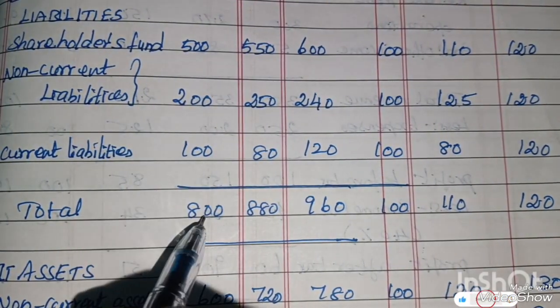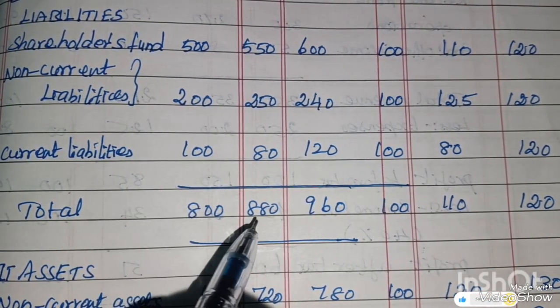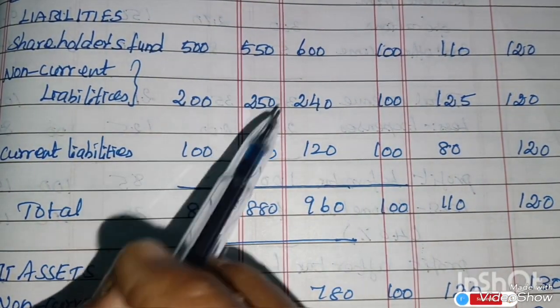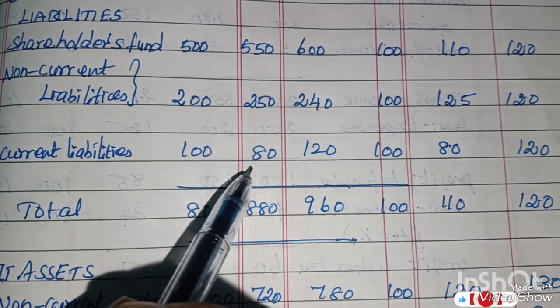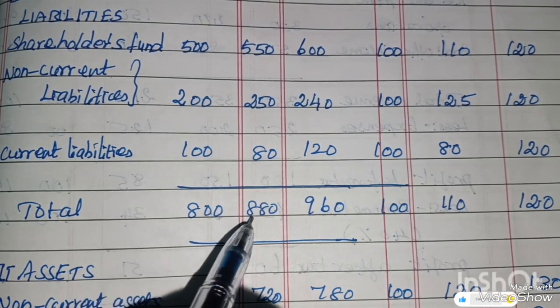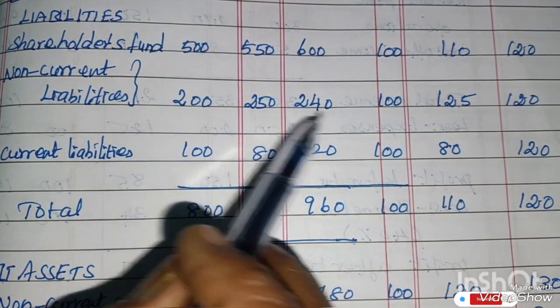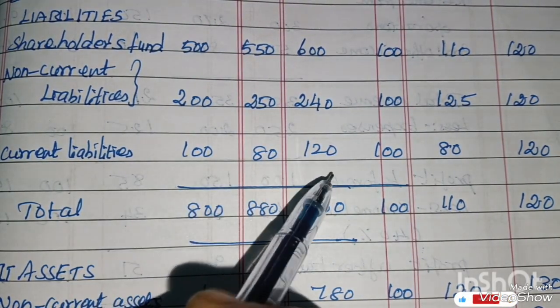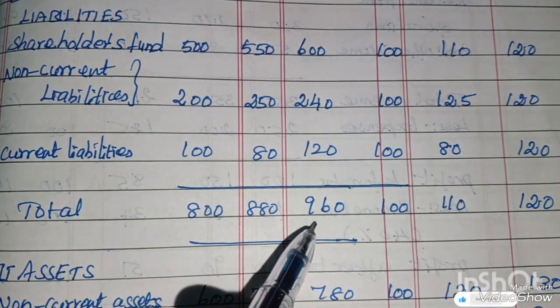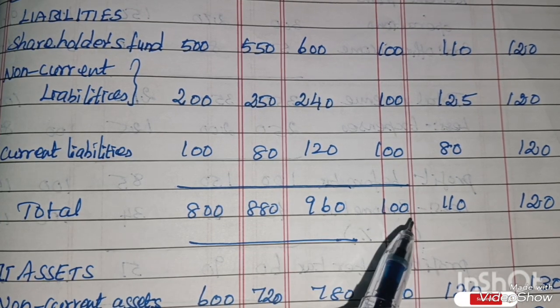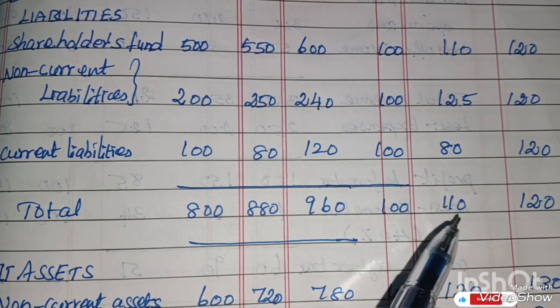Total — 800, 880, 960. Total trend percentages: Year 1 is 100, Year 2 is 110, Year 3 is 120. Components: 600 + 240 + 120 = 960. Total trend percentages confirmed as 100, 110, 120.